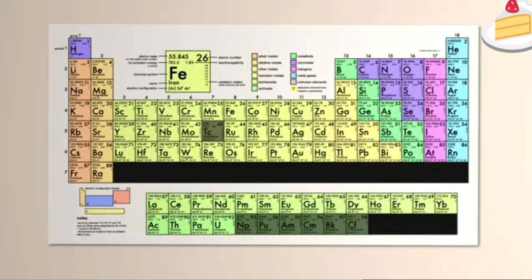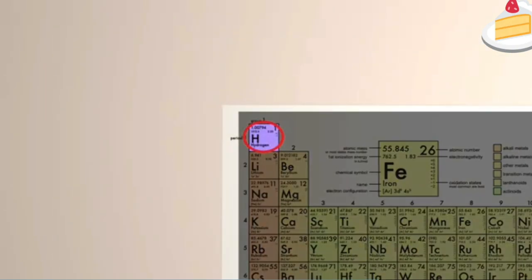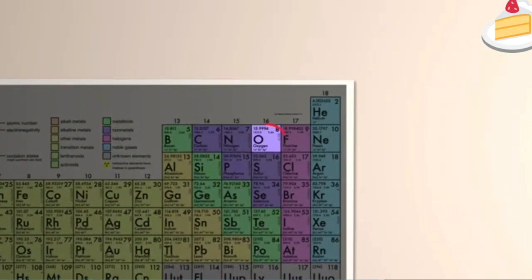Over 80 of them occur naturally, outside of the laboratory. The most common element in the universe, and the lightest, is hydrogen. The most common element in the Earth's crust is oxygen.